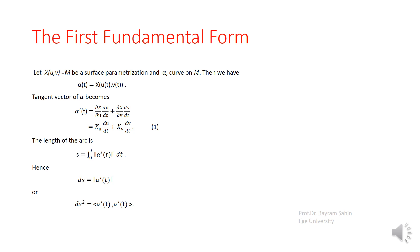We will introduce the first fundamental form of the surface. Let x(u, v) be a surface parameterization of the surface M, and let alpha be a curve on this surface. Because alpha is a curve depending on only one variable, alpha(t) = x(u(t), v(t)).